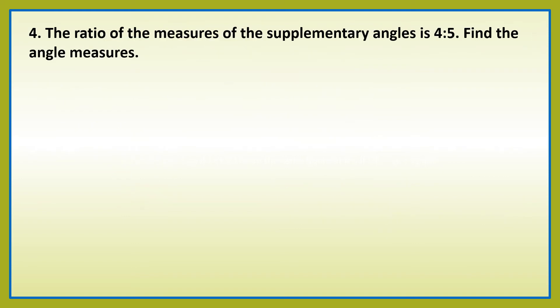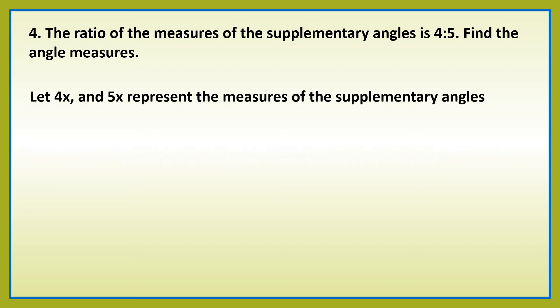Number 4: the ratio of the measures of the supplementary angles is 4 is to 5. Find the angle measures. Let 4x and 5x represent the measures of the supplementary angles. Let us add the two angles: 4x plus 5x. We have to equate this to 180 degrees, kasi ang pinag-uusapan na natin dito ay supplementary angles. Kapag sinabi natin supplementary angles, the sum of the two angles is 180 degrees. So, that is why we have to equate this to 180.